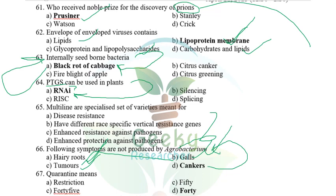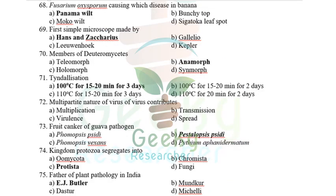Quarantine means a 40-day period — the word 'quarantine' derives from the Italian word meaning 40 days. Fusarium oxysporum causes Panama wilt of banana, otherwise called Fusarium wilt of banana.